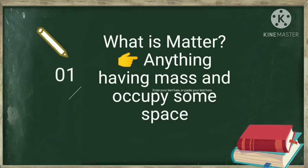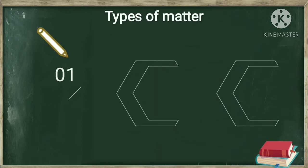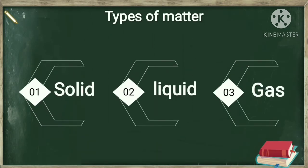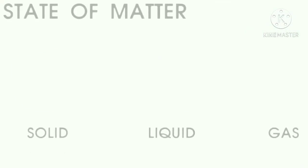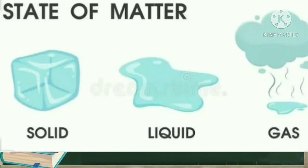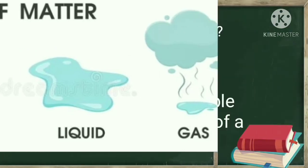This matter exists in three forms: solid, liquid, and gas. An example for solid is ice, for liquid is water, and for gas is vapor.